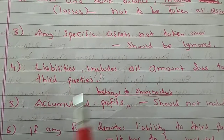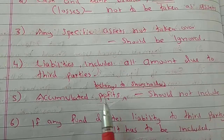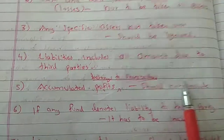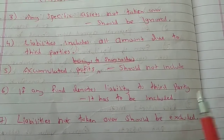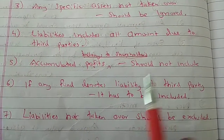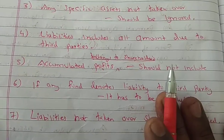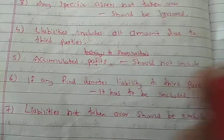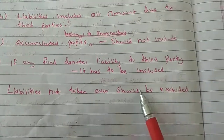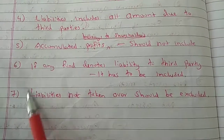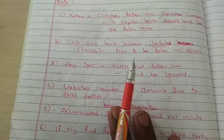If any fund denotes a liability to a third party, it has to be included. Any liability to third parties is obviously included. But liabilities not taken over should be excluded. This is all about the Net Asset method.